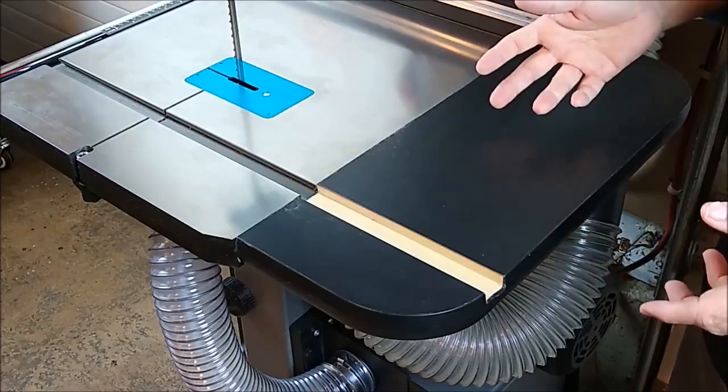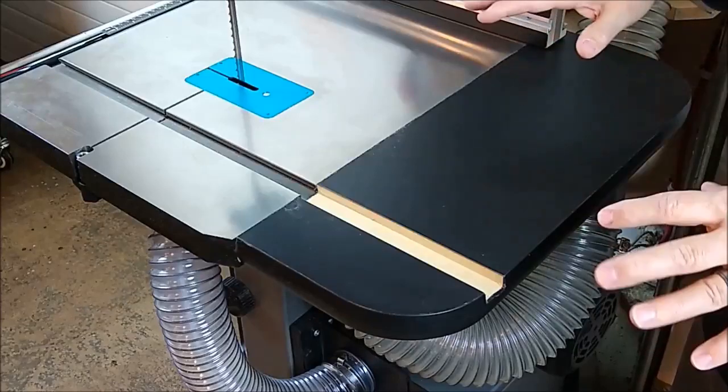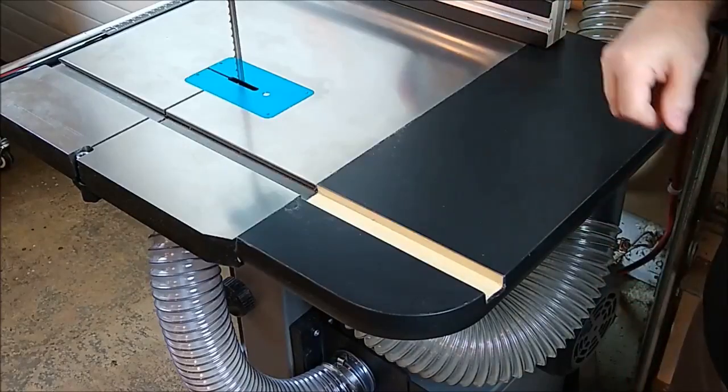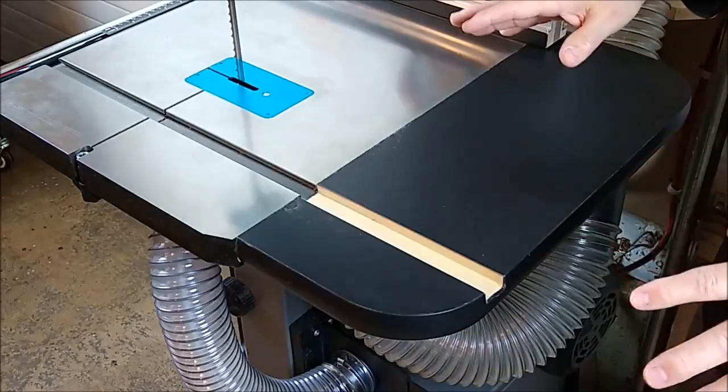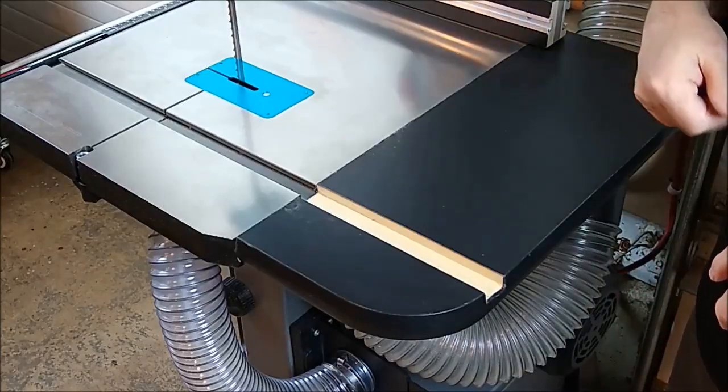So this outfeed table is really one of those things you can just bolt on and leave on for most operations. It's really helpful for catching the outfeed side of a board.